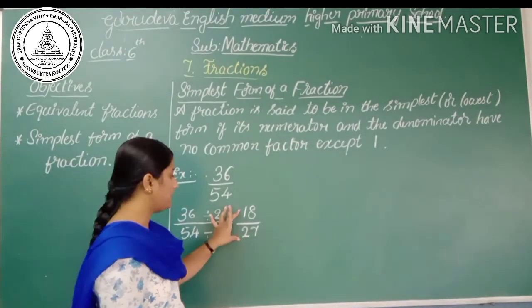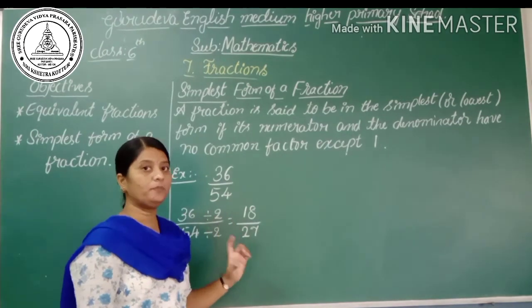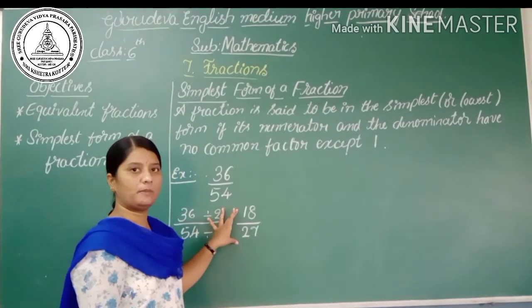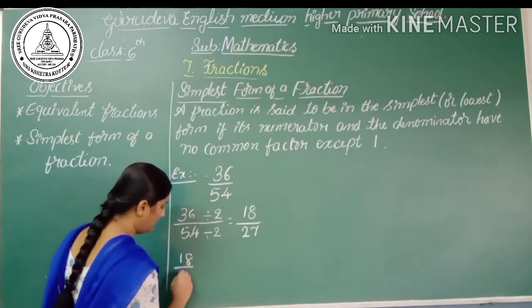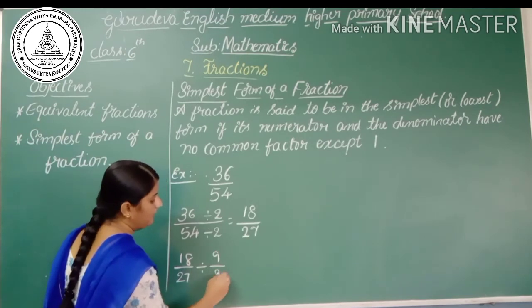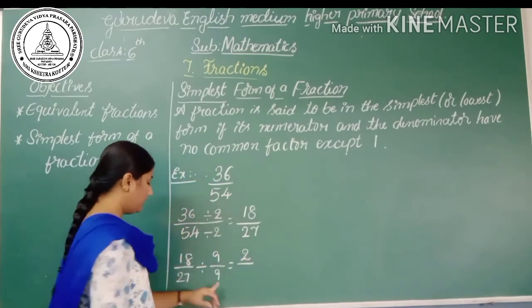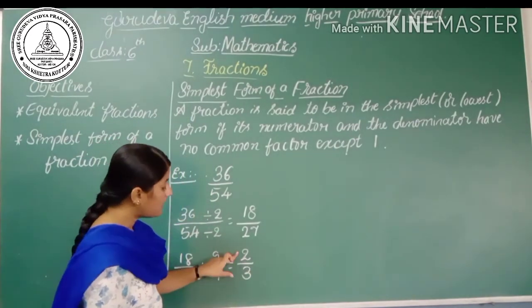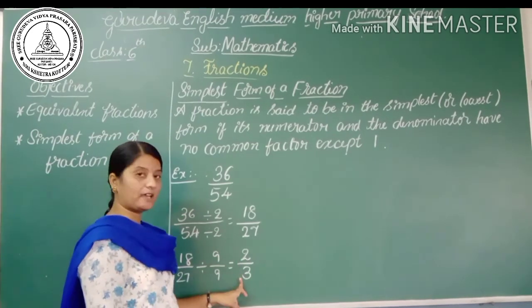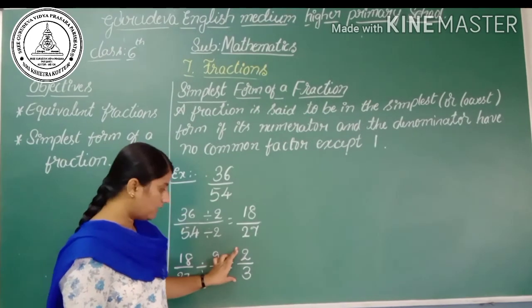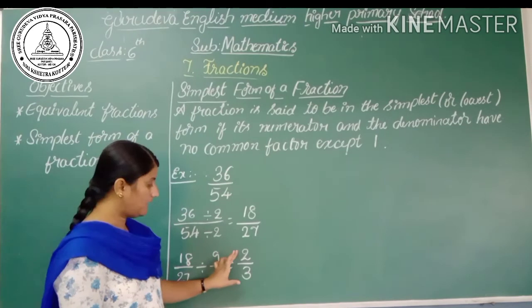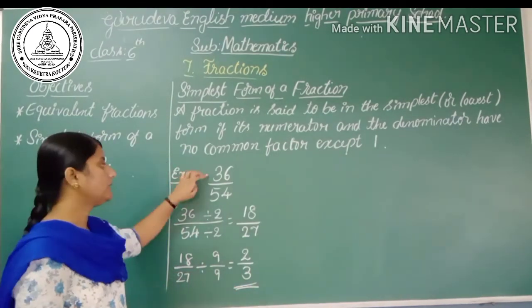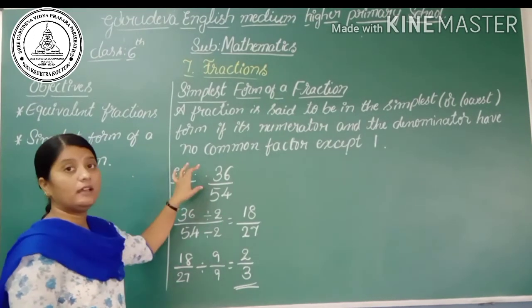Since 18 and 27 are both divisible by 9, we divide again: 18÷9 = 2 and 27÷9 = 3. Now we have 2/3. The numerator 2 and denominator 3 are not divisible by the same number — they have only 1 as a common factor. Therefore, 2/3 is the simplest form of 36/54, and the simplest form is equivalent to the given fraction.